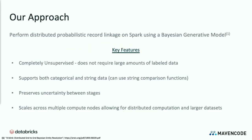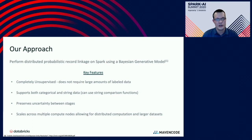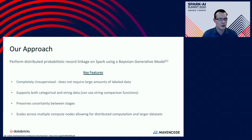Now I'd like to shift into our approach. We decided to perform distributed record linkage with Spark using a Bayesian generative model. This approach is based on published research — there's a link to the research paper and the resulting open source implementation that we were able to leverage and build upon. Some key advantages: it's completely unsupervised, it does not require large amounts of labeled data, it supports both categorical and string attributes allowing use of those comparison functions, uncertainty is preserved between different stages, and Spark lets it scale across multiple compute nodes for distributed computation with much larger datasets.